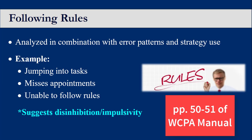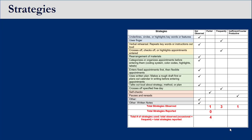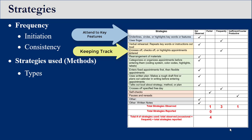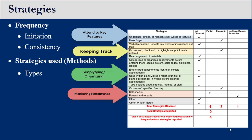Pages 50 to 51 in the WCPA manual further discusses implications of broken rules. Document frequency of strategies used, including initiation and consistency. Strategy type is described by their general purpose, such as attending to key features, keeping track, simplifying or organizing, and monitoring performance.